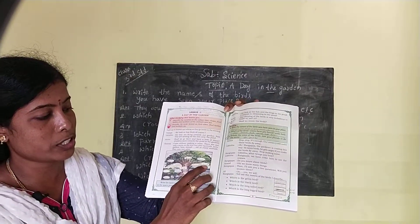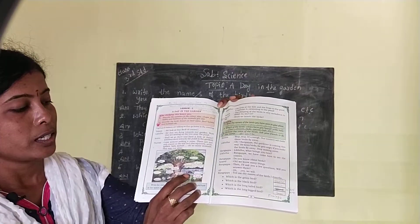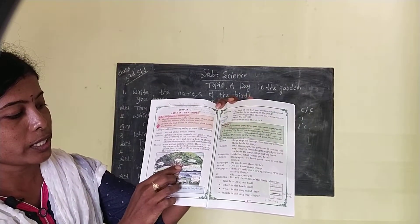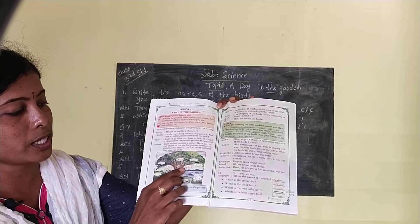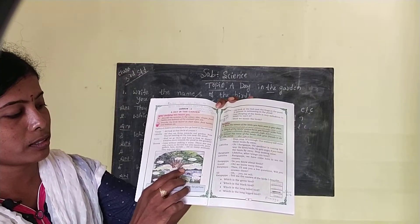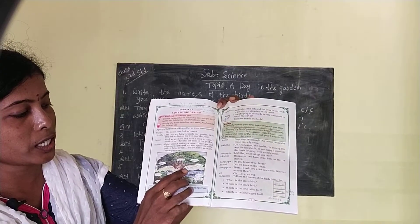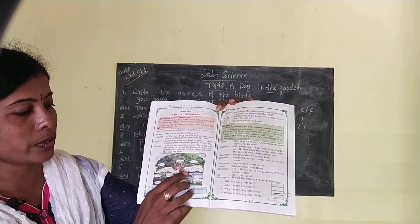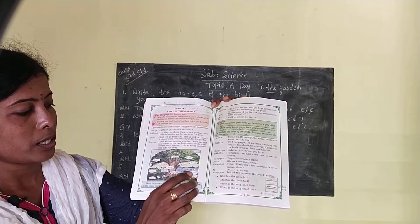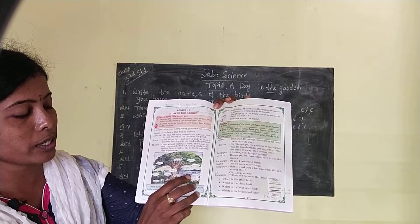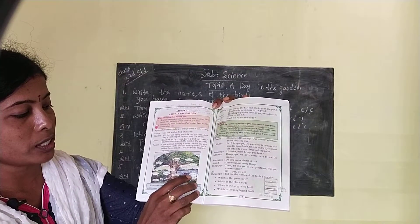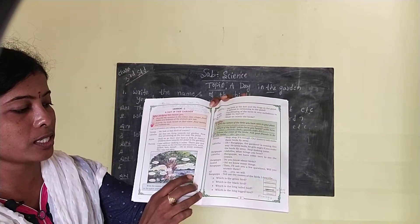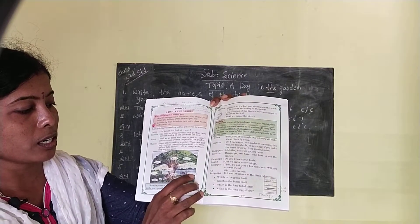You have to write fish. Next, on the tree there is one small animal — that is squirrel. Write down S-Q-U-I-R-R-E-L, squirrel. Next, near the pond there is one more water animal — that is tortoise, T-O-R-T-O-I-S-E, tortoise.